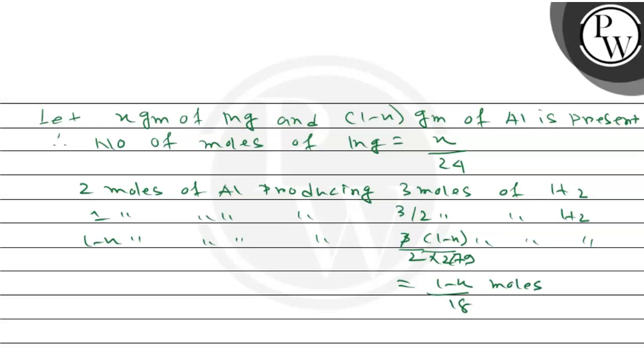So in the next step, we can write that x by 24 plus 1 minus x by 18 is equal to the number of moles of hydrogen, which is 0.0493.